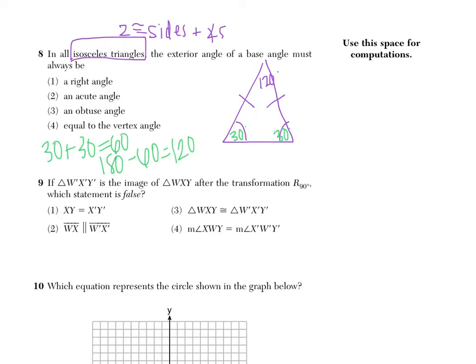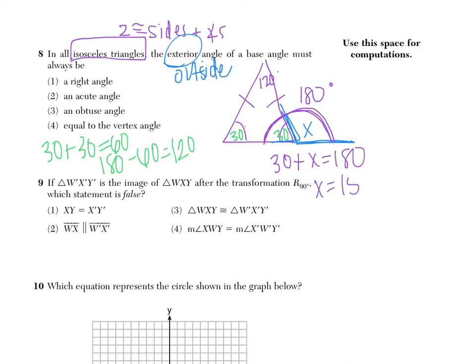Here it says the exterior angle of a base angle. So here's my base angle. And then if we're talking about an exterior angle, that's the one that extends on the outside. Exterior means outside. So here I'm going to choose to call this x. And if we think about exterior angles, if this one on the inside is 30 and the one on the outside is x, these two should always sum to 180. So we have 30 plus x equals 180. So x equals 150.